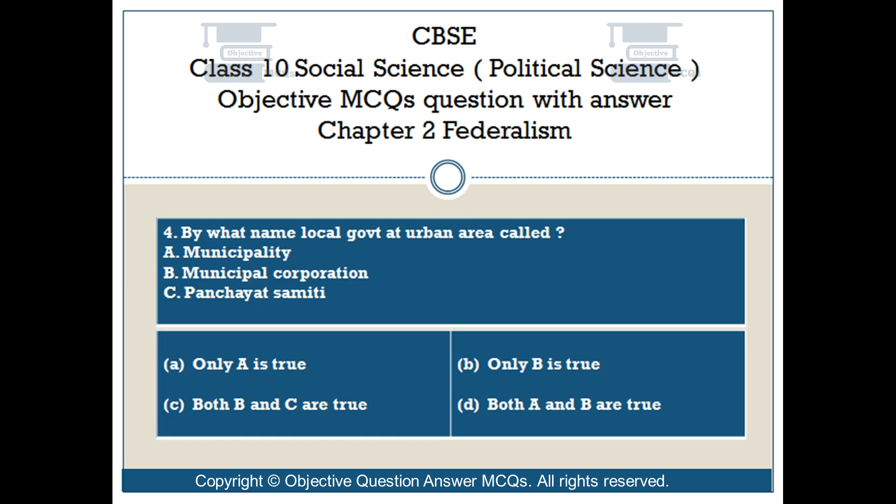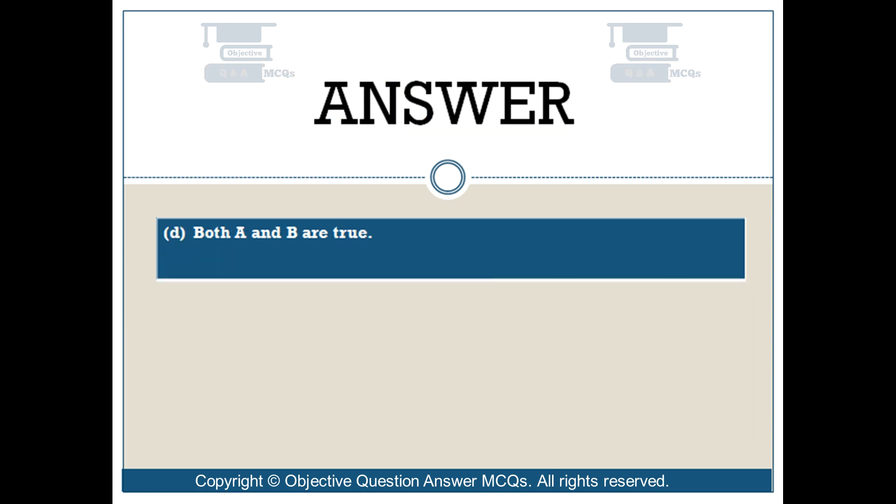Question number 4: By what name is local government in an urban area called? A: Municipality. B: Municipal Corporation. C: Panchayat Samiti. Option A: Only A is true. Option B: Only B is true. Option C: Both B and C are true. Option D: Both A and B are true. The right answer is Option D: Both A and B are true.